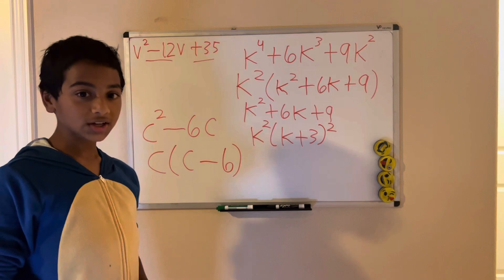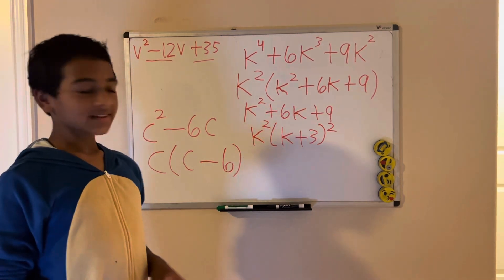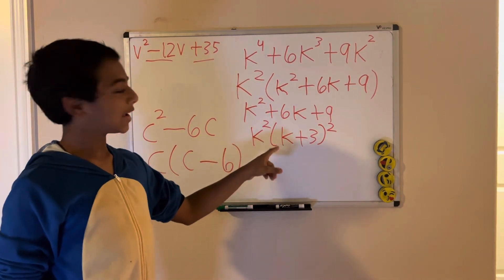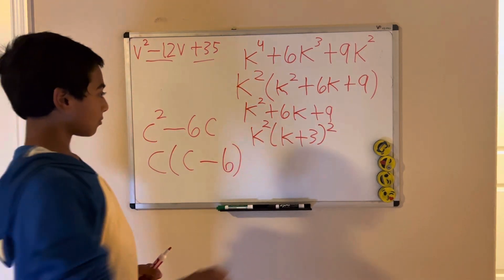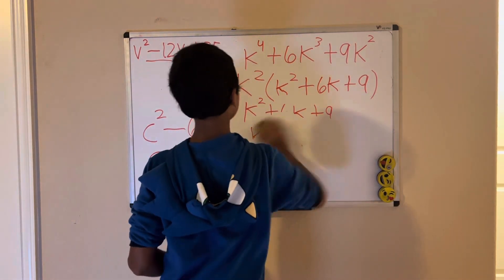So our solution in number 3 is k squared times k plus 3 squared. Let's erase and move on to the next example.